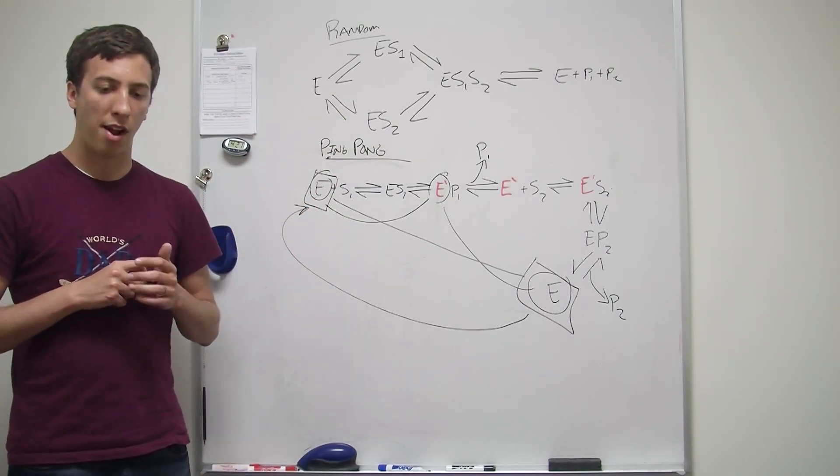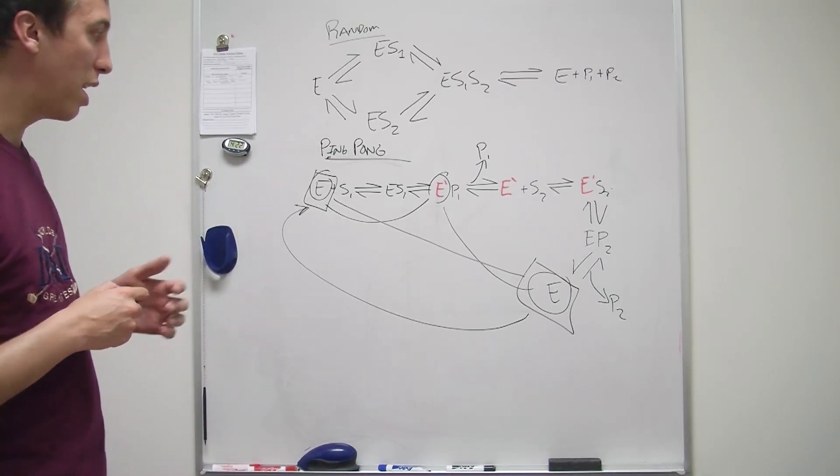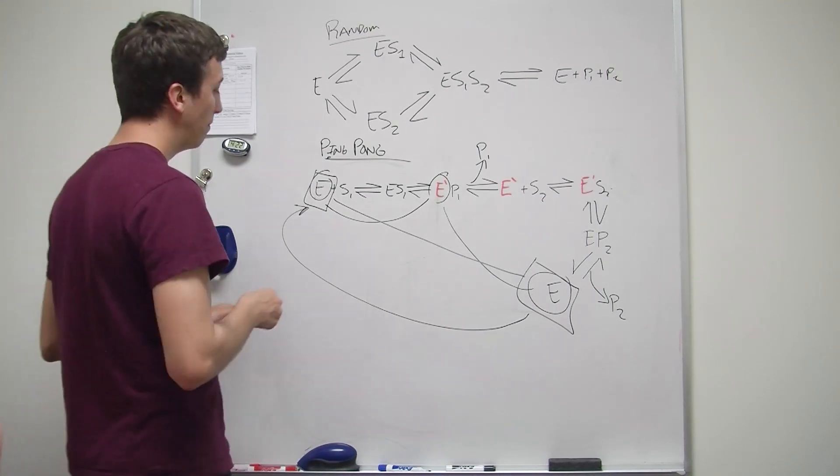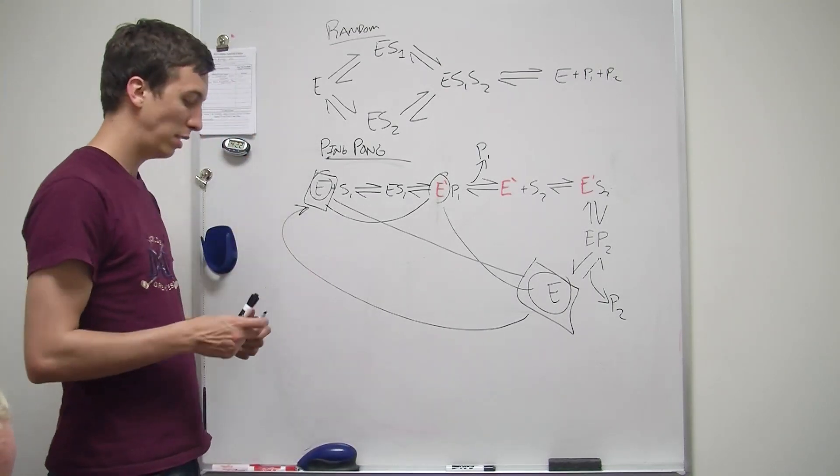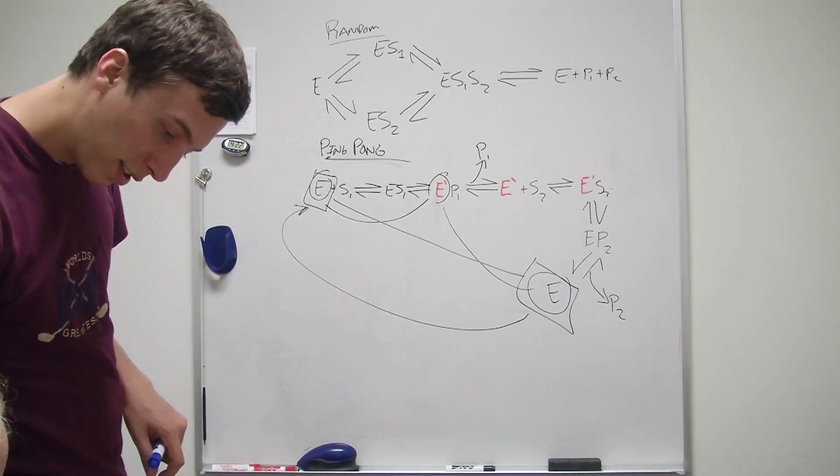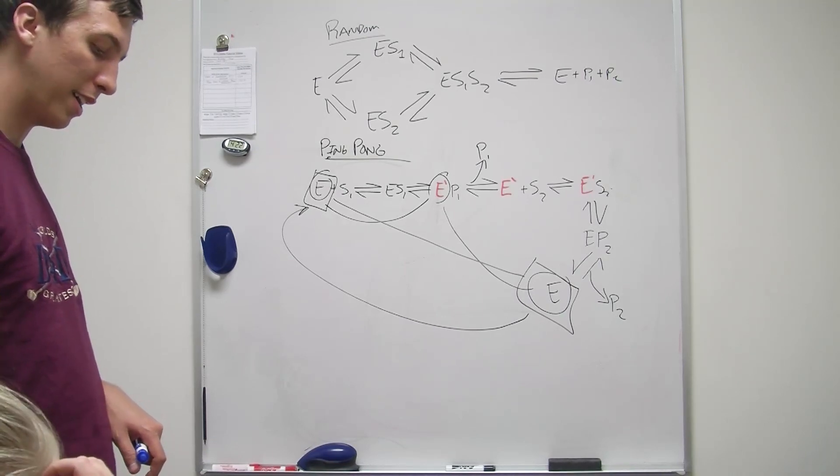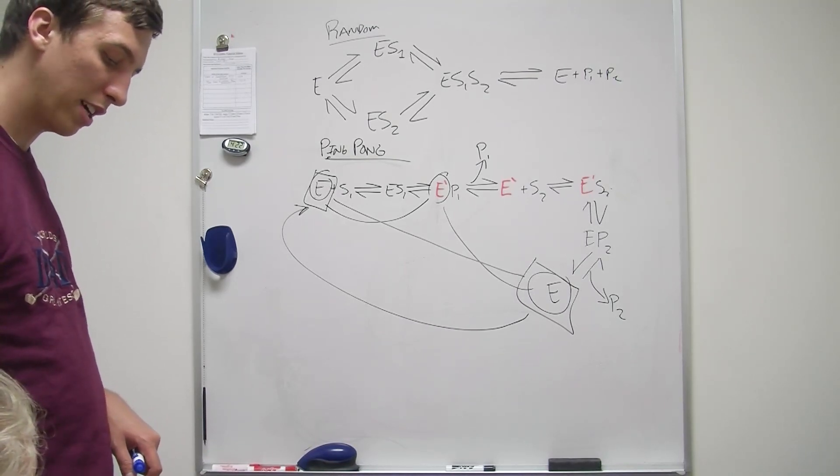So why does it produce a graph that looks like non-competitive, I mean uncompetitive? Okay, let me... which one? This one's supposed to be ping pong. That one is not labeled. Okay, so this one is like a mix and that one is like uncompetitive.